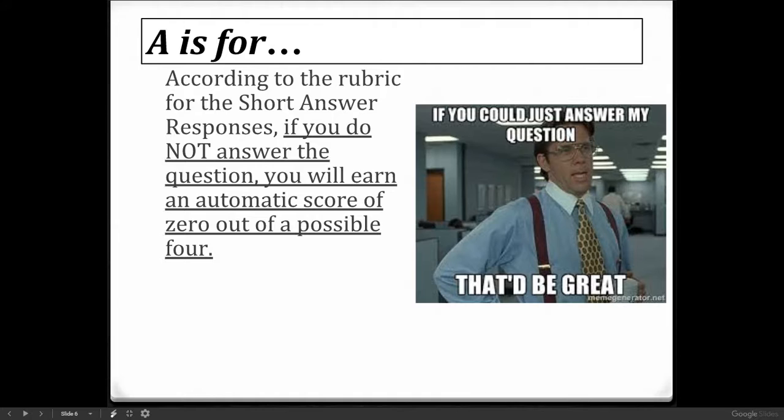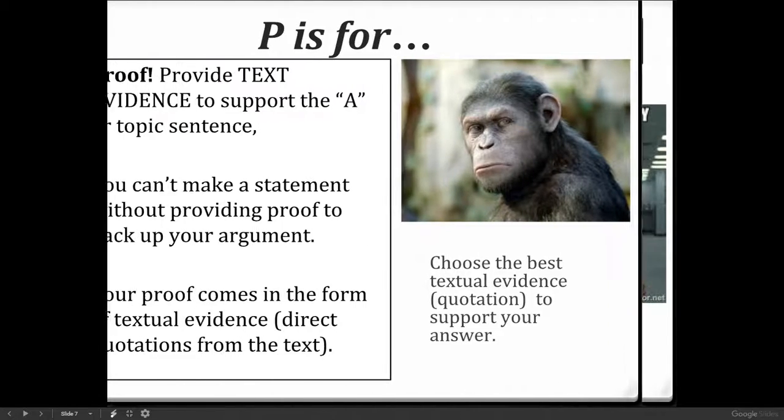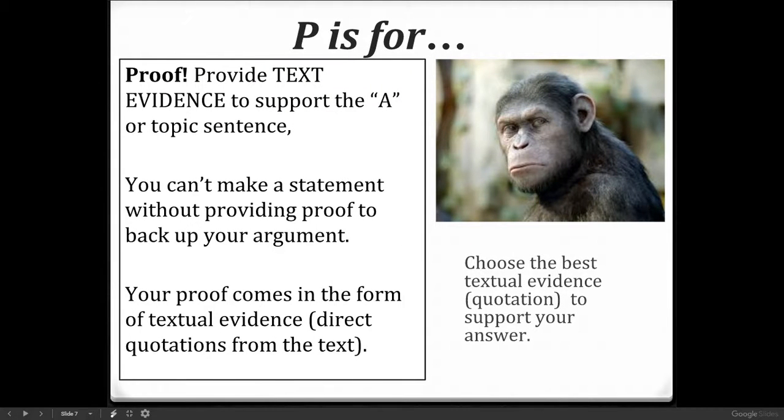According to the rubric for the short answer response, if you do not answer the question, you will earn an automatic score of zero out of a possible four. P is for Proof, or provide text evidence to your answer or your topic sentence.